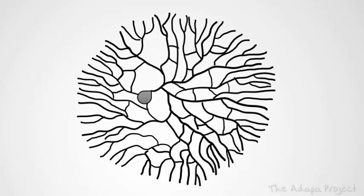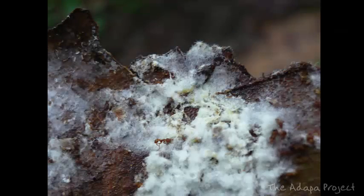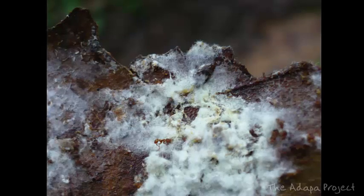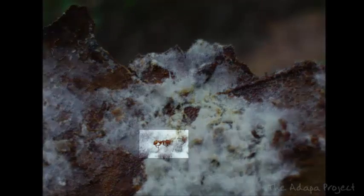Some fungal species can cover enormous areas, such as the famous fungus from Oregon in the United States, which is known as the largest organism on earth. Mycelium can have different colors but is often whitish, and you can easily find it if you turn around leaves on the ground. A lot of insects, such as this tiny ant here, use fungi as their food.